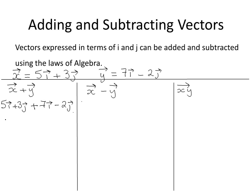And just like algebra, you're going to group the like terms together. So 5i plus 7i plus 3j minus 2j. 5i plus 7i is 12i, plus 3j minus 2j is plus 1j. So the vector x plus the vector y equals 12i plus 1j.